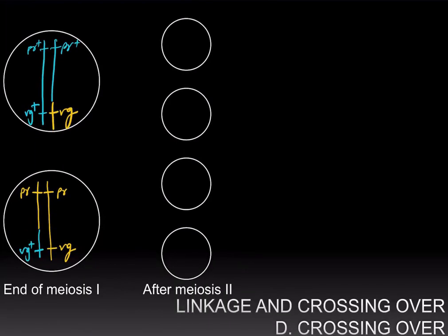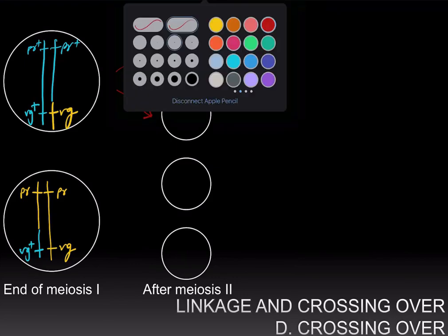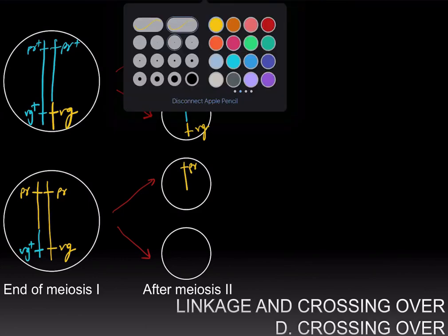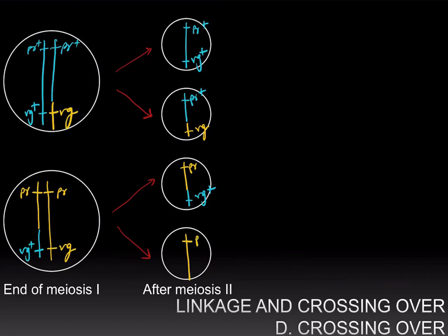During meiosis II, the sister chromatids are going to separate, giving us the following gametes. From the first daughter cell, we will get a purple-plus vestigial-plus gamete and a purple-plus vestigial gamete. From the second daughter cell, we will get a purple vestigial-plus recombinant genotype and a purple vestigial parental genotype.